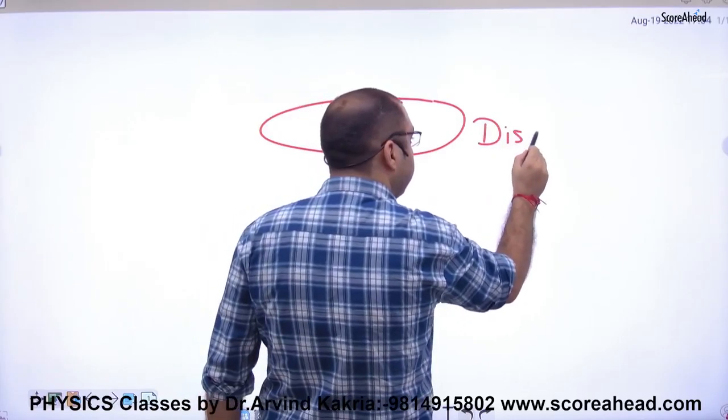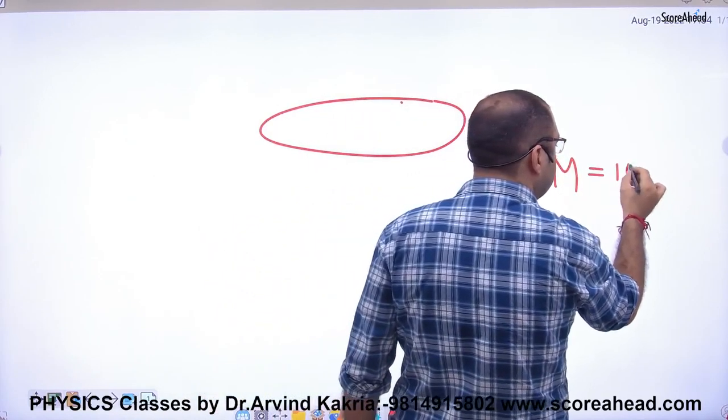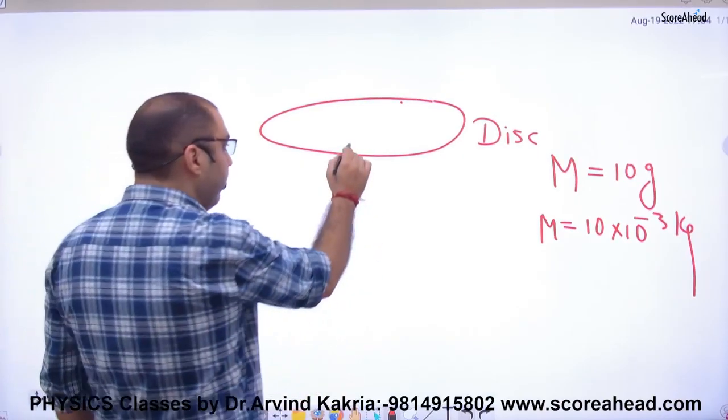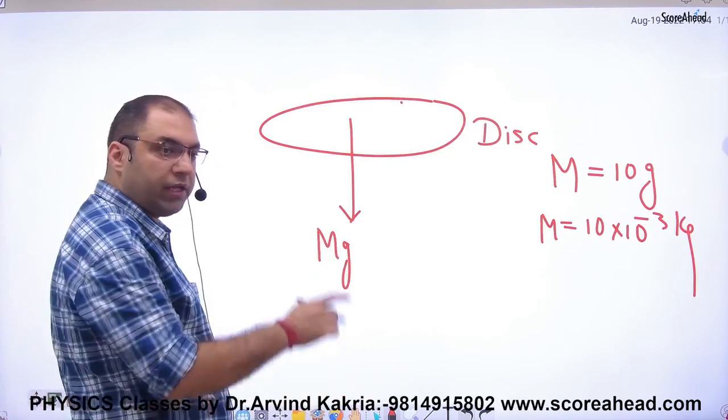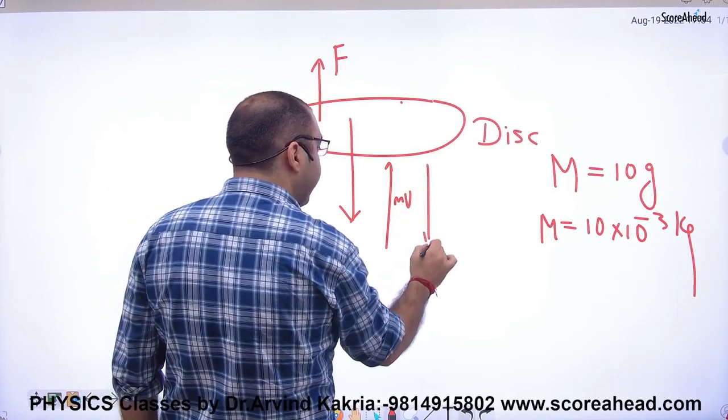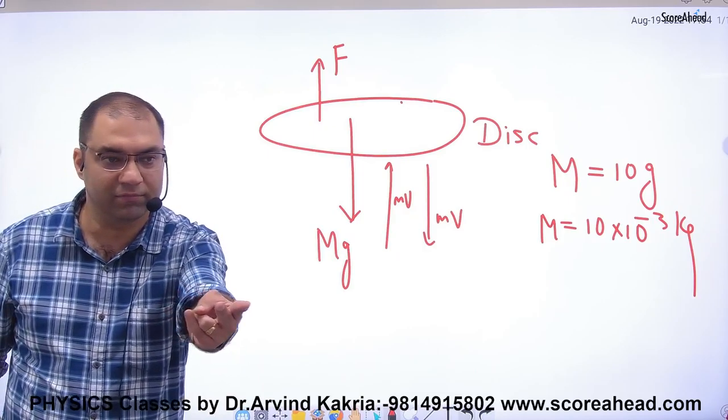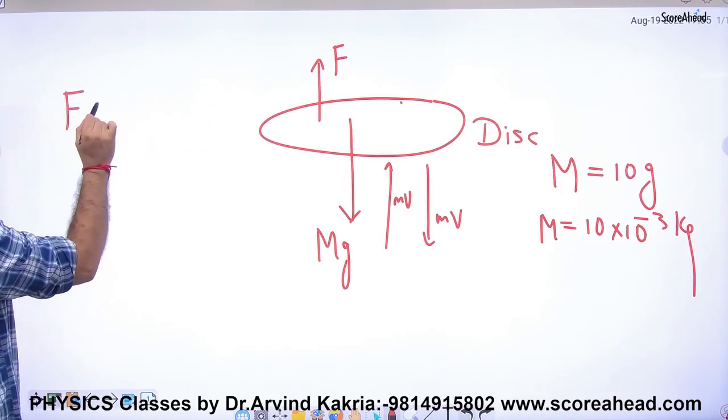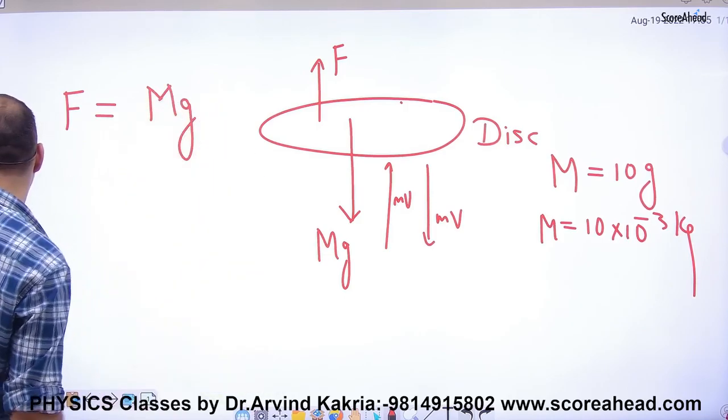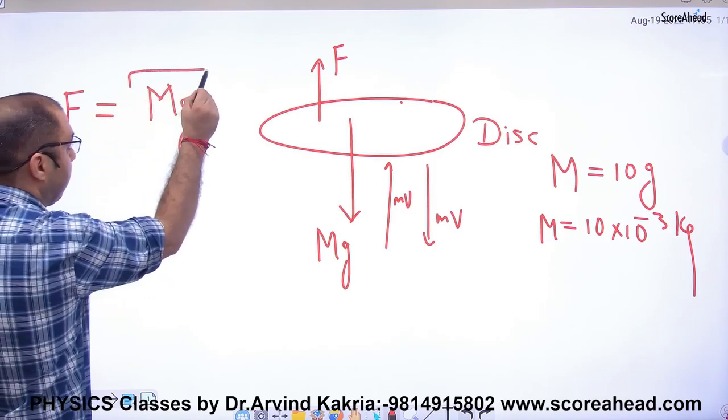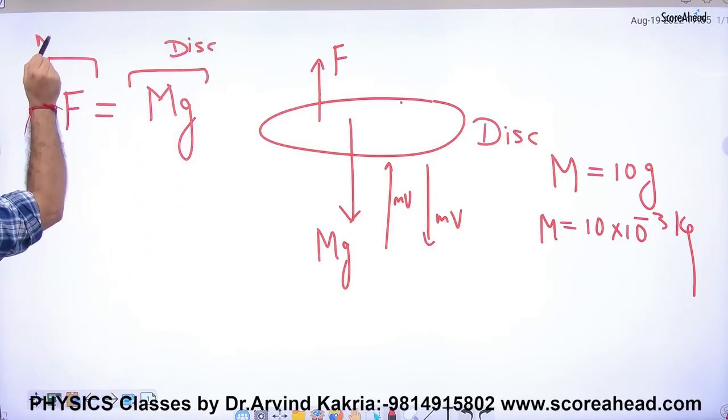Best method: suppose you have a disk with mass 10 grams, which is 10 × 10^-3 kg. The disk will fall because of its weight, capital Mg. The disk stays up because marbles apply force on it. How? Marble comes with mv, goes back with mv. So one marble's change in momentum is 2mv, directly 2mv. Clear? The disk remains at rest when the marble's force is balanced by the weight of the disk. Is this point clear?